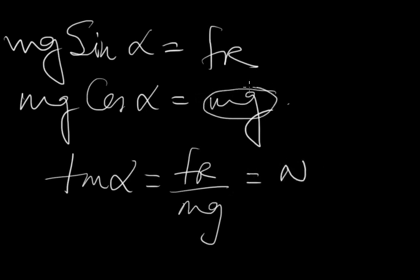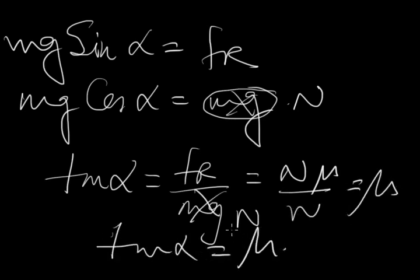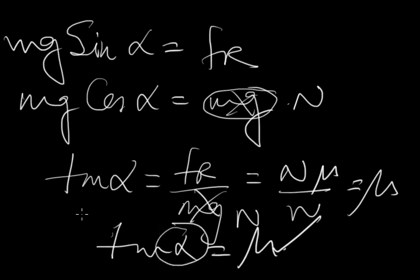This normal reaction N cancels, giving tan alpha equals mu. So for the same value of mu, the angle of repose alpha and the angle of friction theta are equal. This is a very important result: the angle of repose and the angle of friction are the same for the same coefficient of friction.